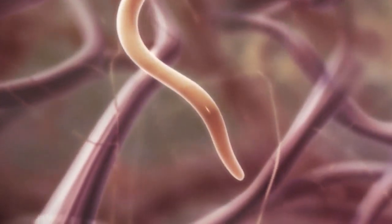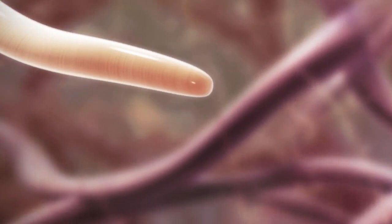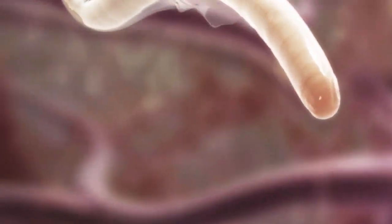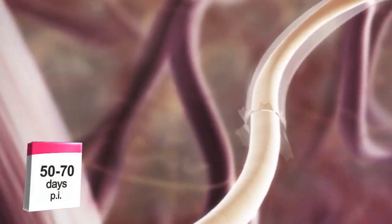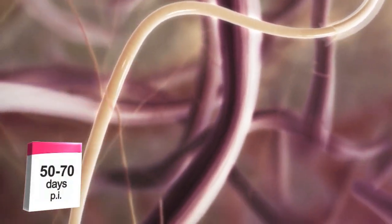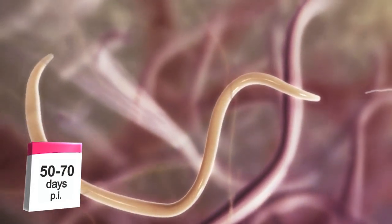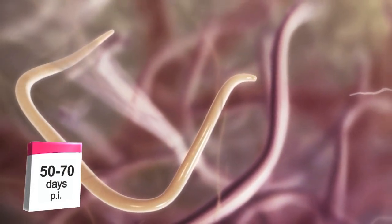During the following weeks, the L4 larvae migrate through the tissues of the dog. At day 50 to 70 post-infection, L4 larvae molt into immature adults.